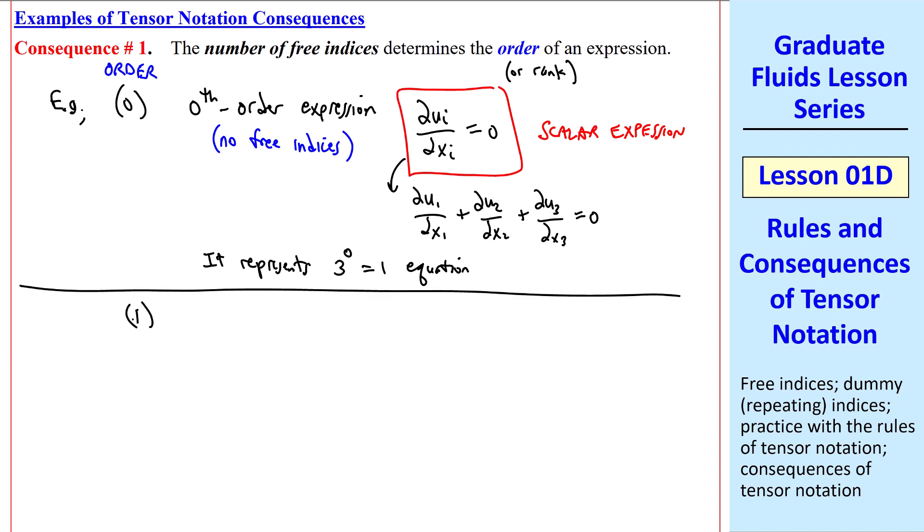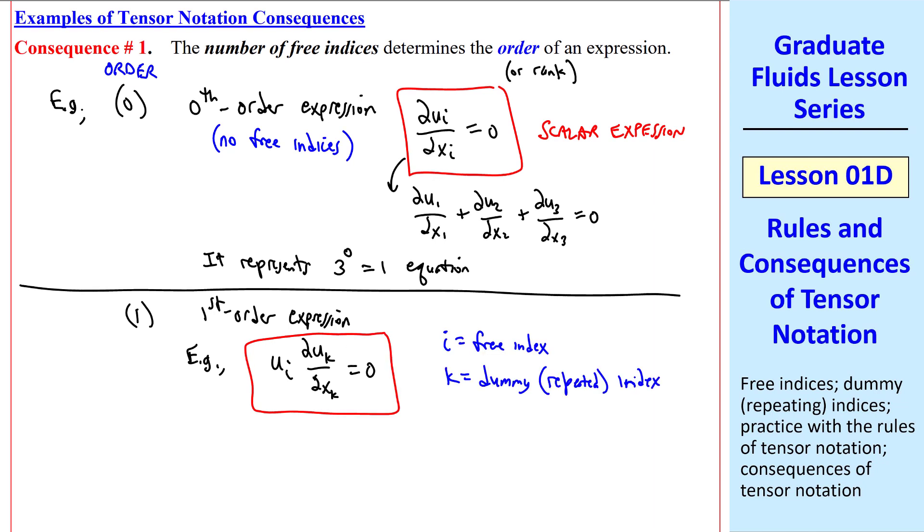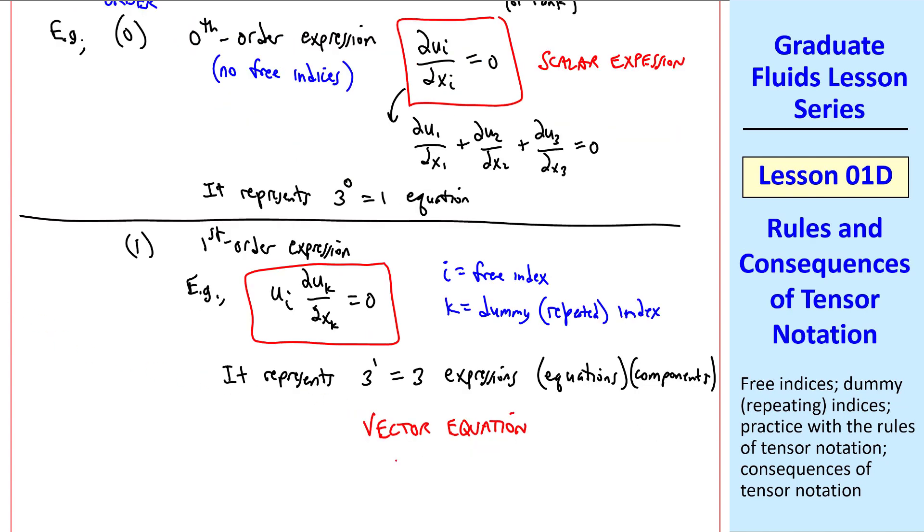Let's increase our order to 1. We now have a first order expression. For example, this expression, where i is a free index and k is a dummy or repeated index. It represents 3 to the 1, or 3 expressions, or in this case, 3 equations, or components. This is thus a vector equation. We expand this del uk del xk term the same way we did here, but there's actually 3 equations, one for each i.